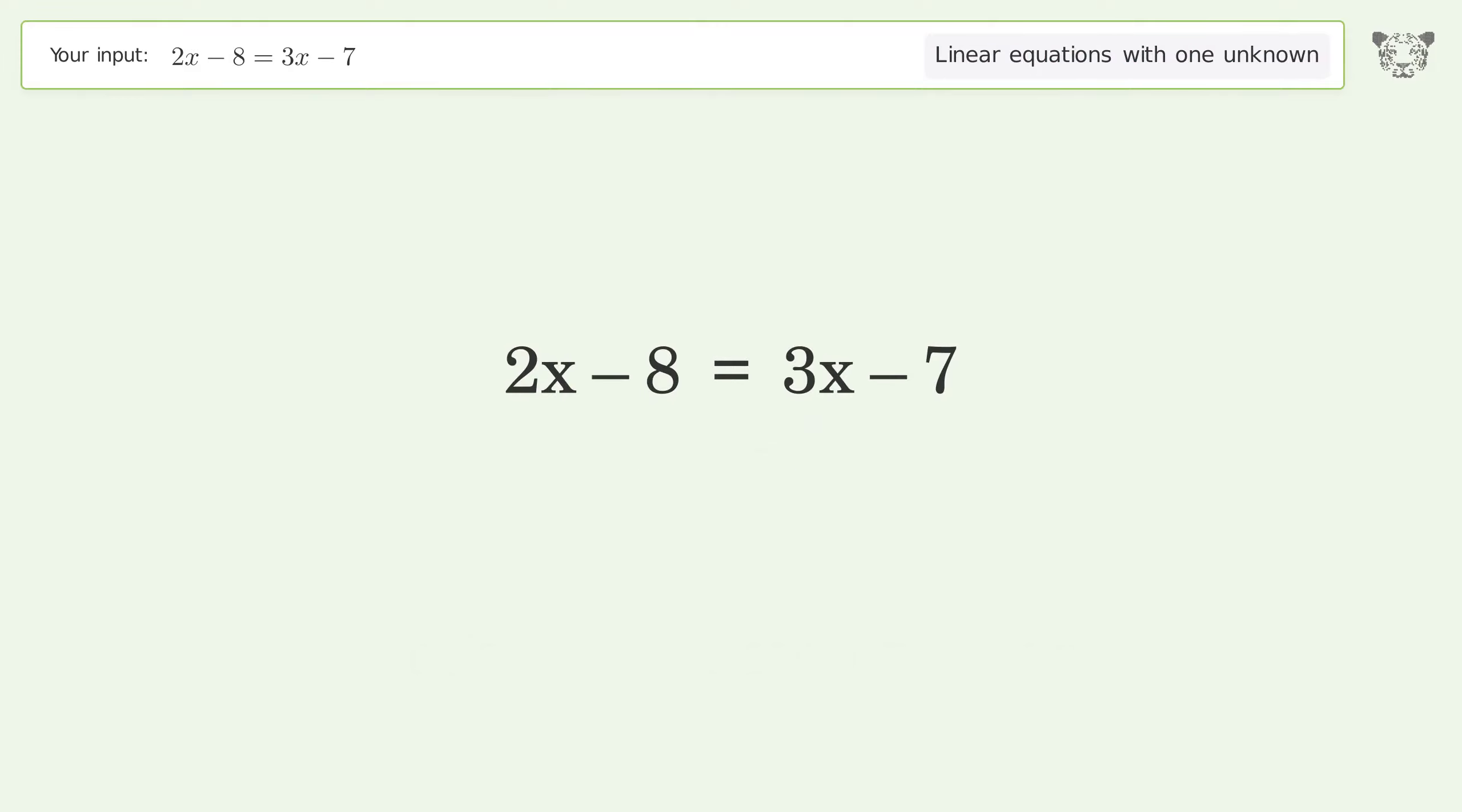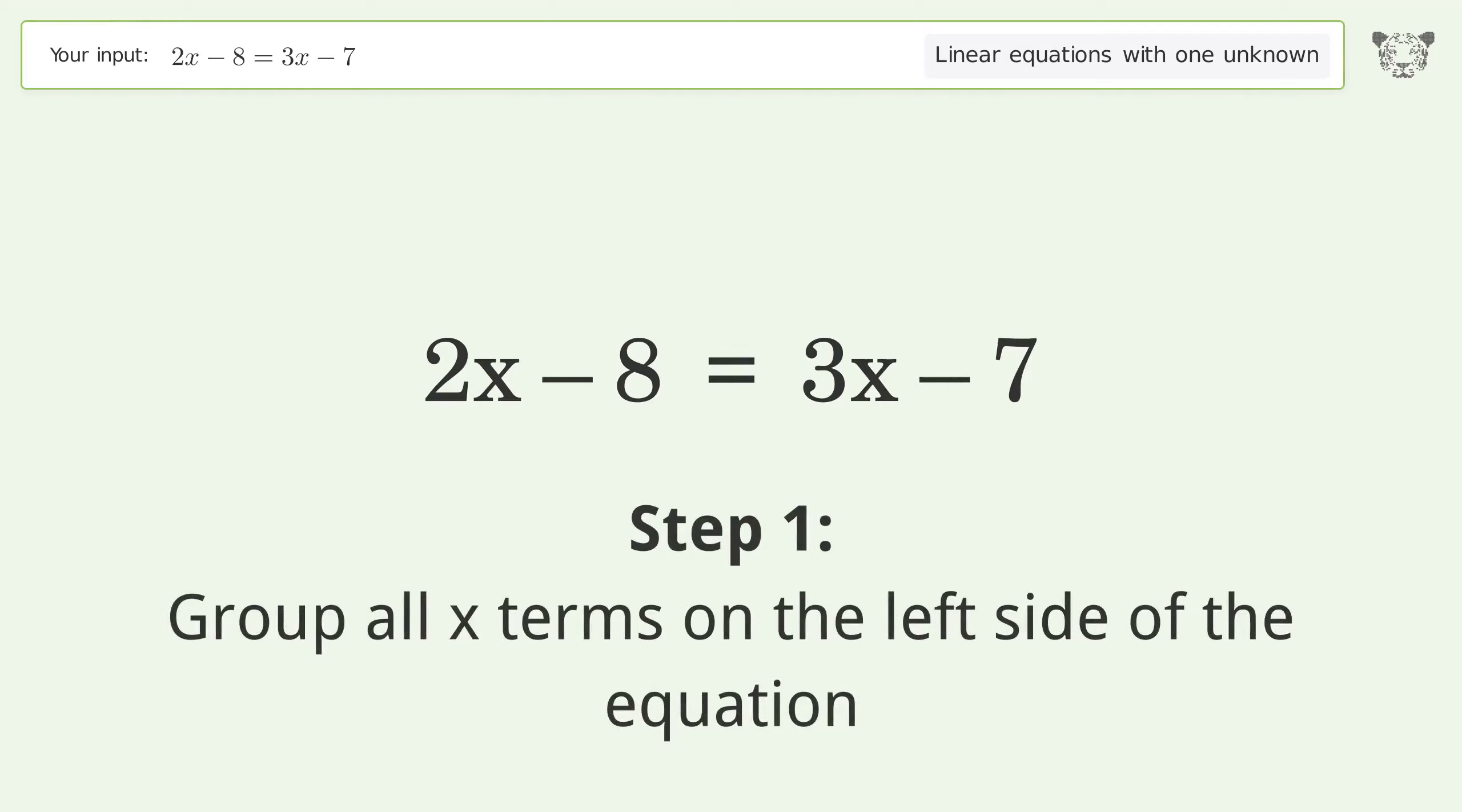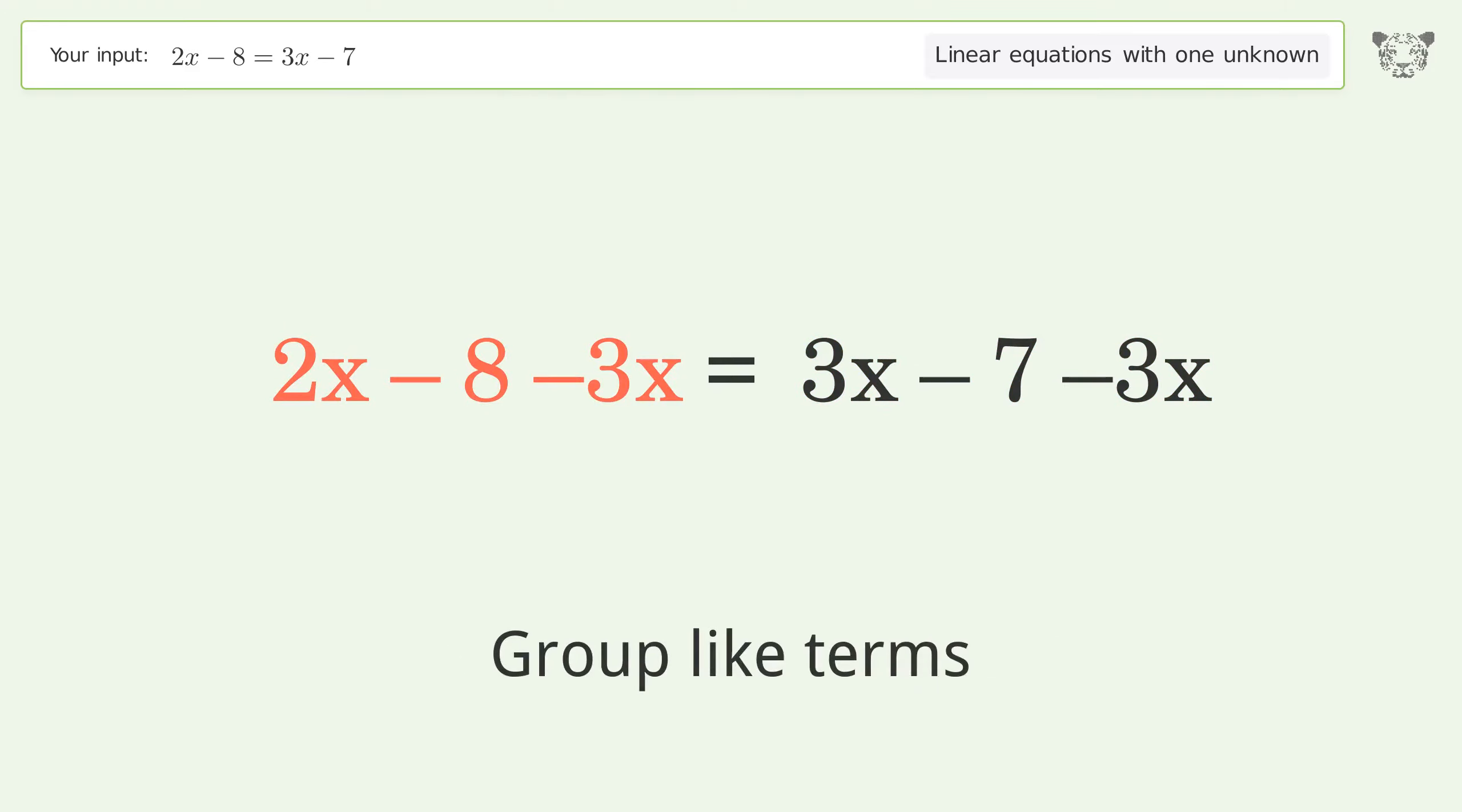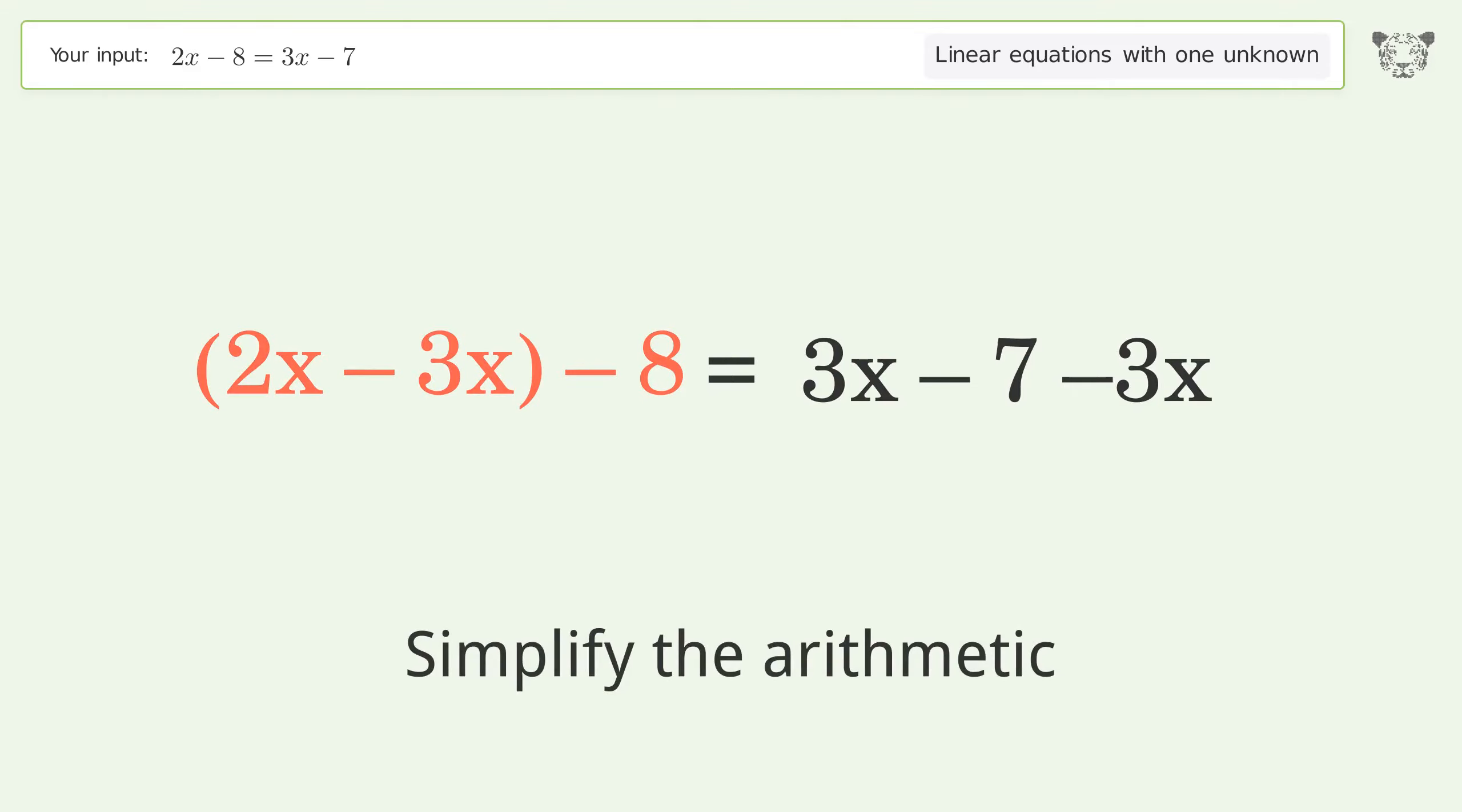Let's solve it step by step. Group all x terms on the left side of the equation. Subtract 3x from both sides. Group like terms. Simplify the arithmetic.